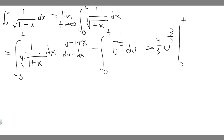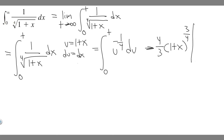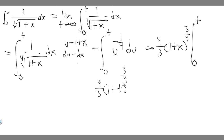We replace u with 1 plus x, giving us (4/3)(1 plus x) to the 3/4, evaluated from 0 to t. Plugging in t gives (4/3)(1 plus t) to the 3/4. Plugging in 0 gives (4/3)(1 plus 0) to the 3/4, and since 1 to the 3/4 is 1, that's just 4/3. So we have (4/3)(1 plus t) to the 3/4 minus 4/3.